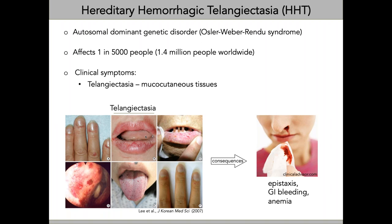When you look at the clinical symptoms of HHT, one of the typical ones are what we call telangiectasias — dilated small blood vessels that like to form in the mucocutaneous tissues. You can see them as red spots in the skin, on the lips, in the tongue, and in the nasal passages. They also tend to form in the GI tract. As a consequence, many HHT patients have really severe nosebleeds, as well as GI bleeding and can be anemic.